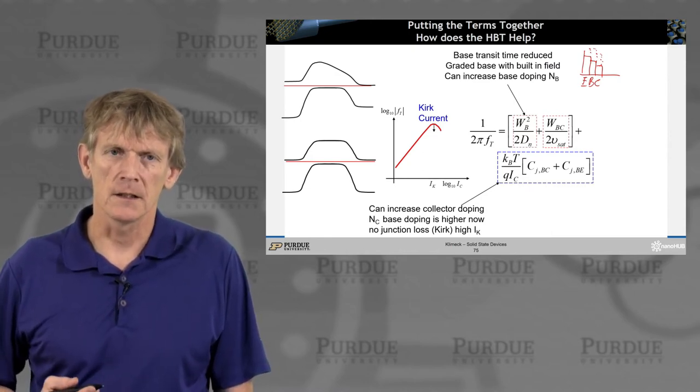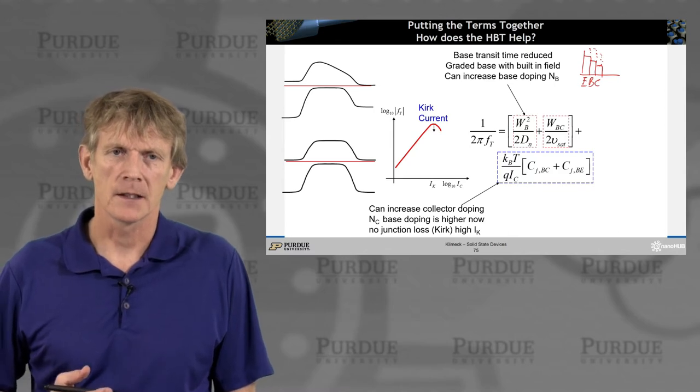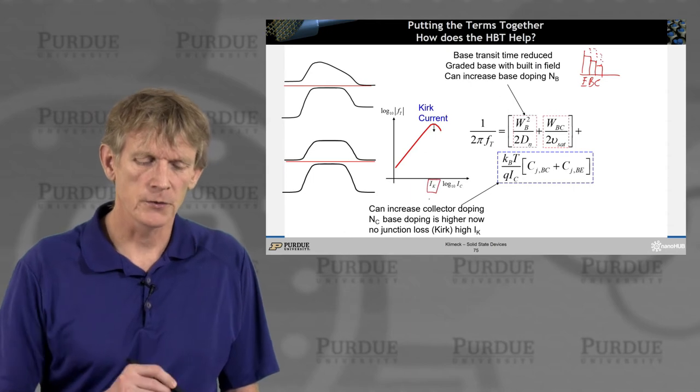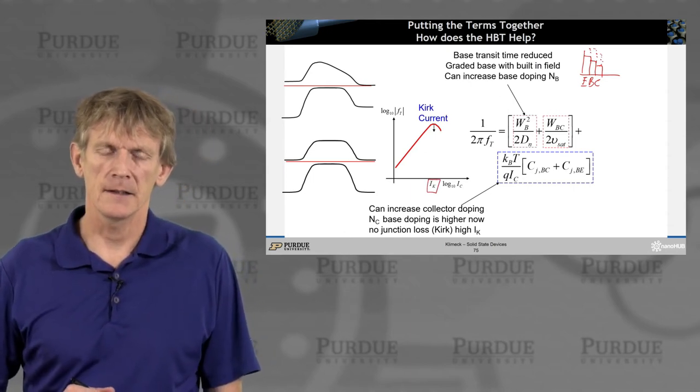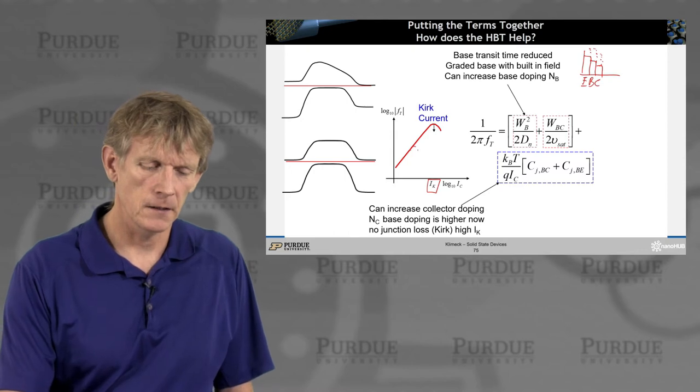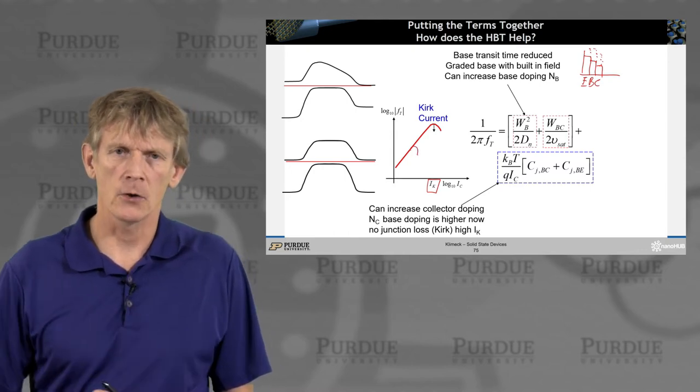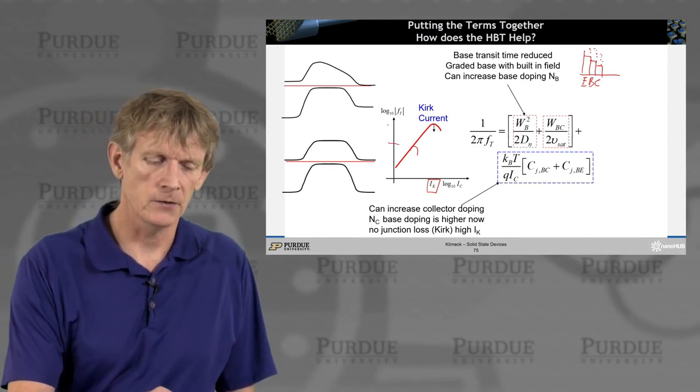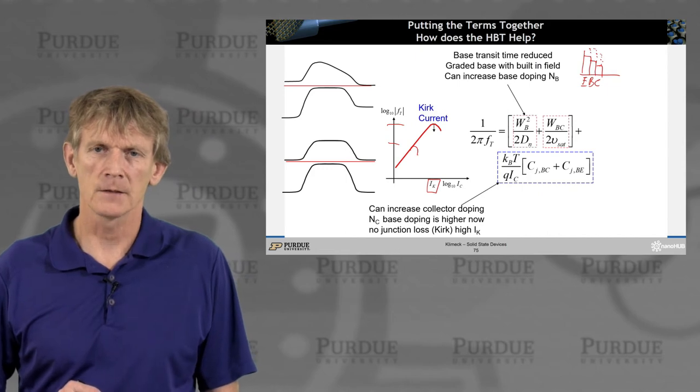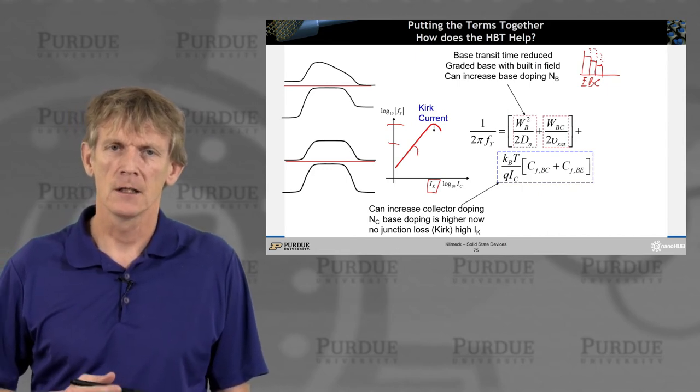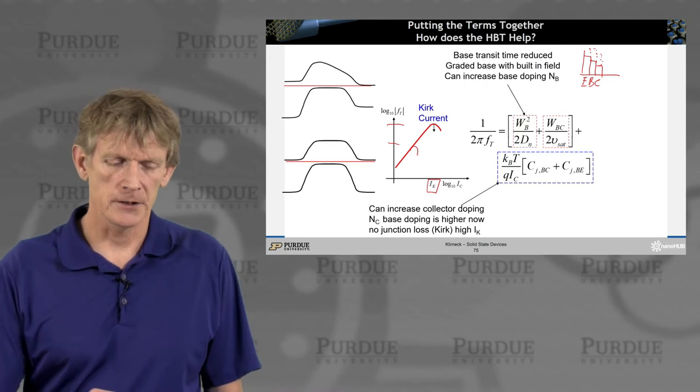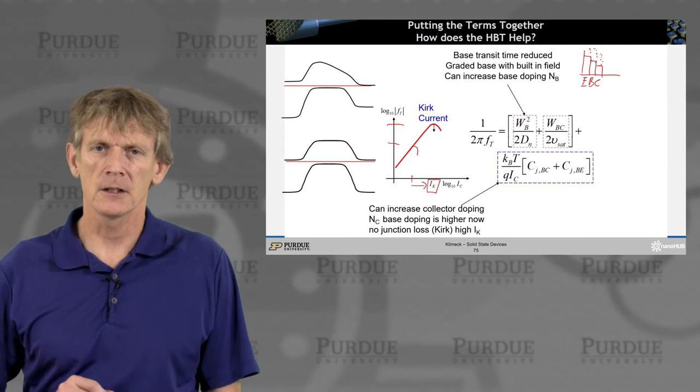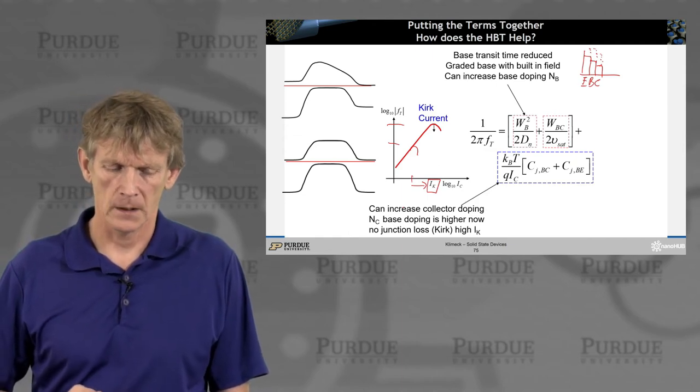And if you bring up the collector doping, there's all kinds of interesting things that happen there. You won't have a junction loss because you can control the junction better. That means your Kirk current goes to higher values. And that means instead of kinking off here, you can ramp up the current higher. And as you ramp up the current higher, you can go orders of magnitude up in your FT. So if you can crank up your collector current dramatically by shifting the IK to higher values on the log scale, you can increase your FT dramatically.